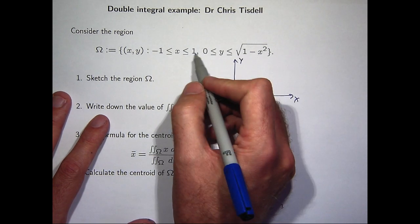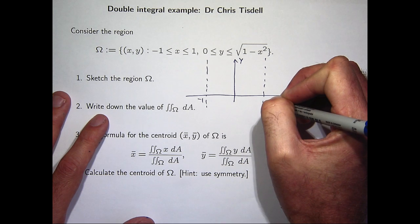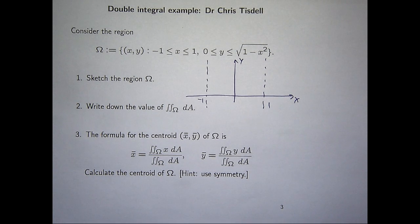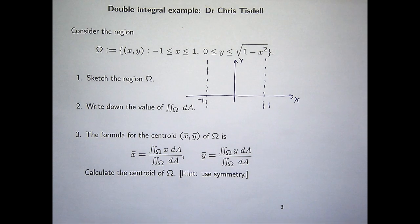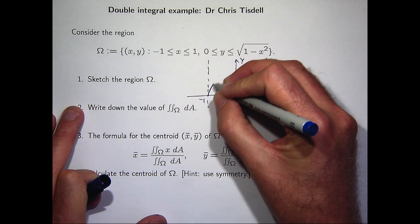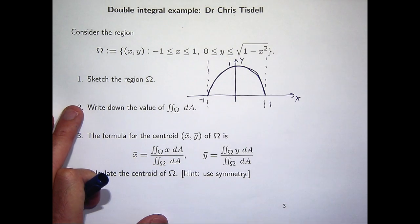So sketch y equals root all of this, sketch y equals 0, sketch x equals 1, x equals minus 1. All right. Well, x between minus 1 and 1, that's going to be something like these two curves. And let's just consider the curve y equals root 1 minus x squared. Well, if I square both sides, I'm going to get something like x squared plus y squared equals 1. So it's kind of like a circle with radius 1 and center at the origin.